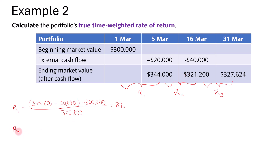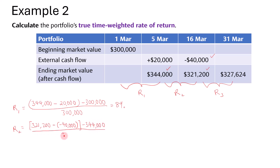For sub-period return two, the period starts with $344,000 and ends with $321,200, but this is after the withdrawal of $40,000. So we take 321,200, minus negative 40,000 to remove the external cash flow, and compare it versus the previous period's ending market value of $344,000. That gives us 5%.